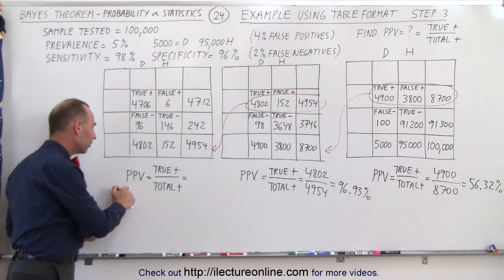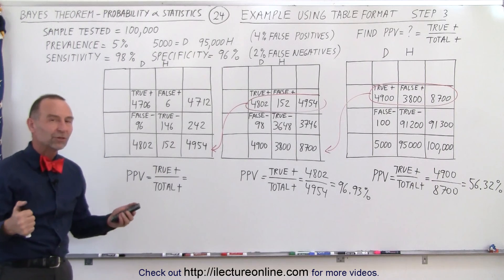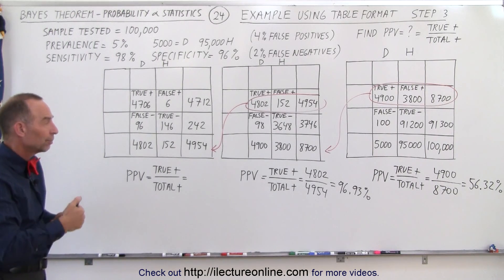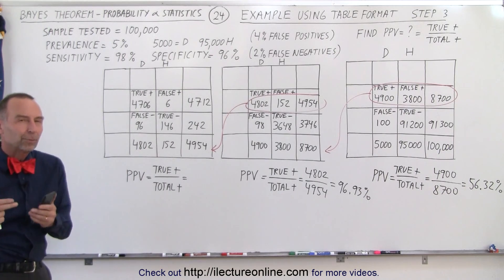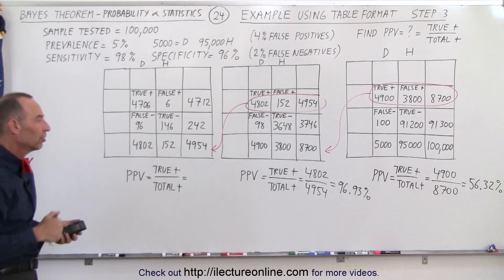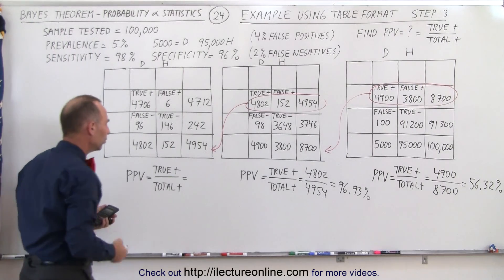Now do we have a positive predictive value that is reasonable, that we can really trust? So when people say, well if I tested positive three times in a row, what is the probability that I truly have the condition we're testing for? So let's go ahead and plug in the numbers.